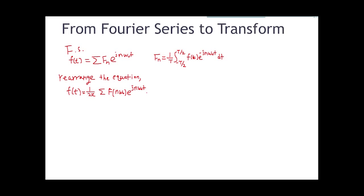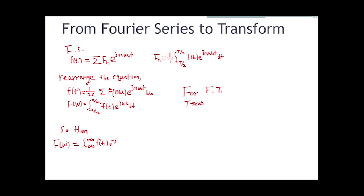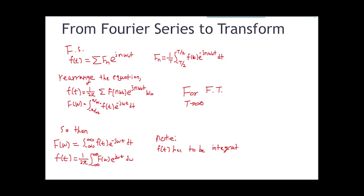If we rewrite the Fourier series equation, we can simplify it down into two functions, F(t) and F(omega). When our period is infinity, the equations we wrote for F(t) and F(omega) converge to two new functions. By using these two new equations, we can convert a function from time domain to frequency domain, and convert a function in frequency domain back to time domain. Note that our function must have a finite integral from negative infinity to positive infinity — Fourier transform does not work on a diverging function.